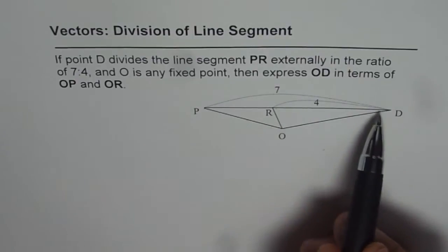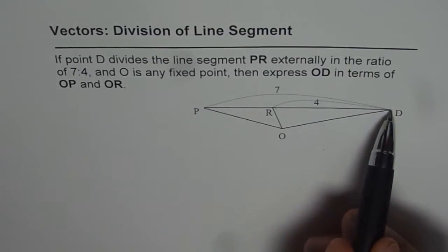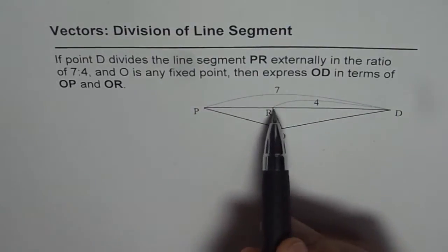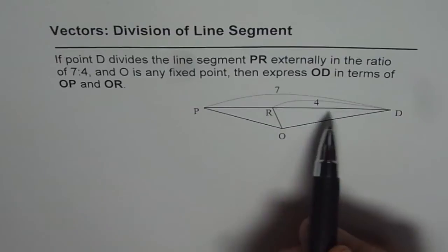which is external, as you can see, in the ratio of 7 - this is PD is 7 - is to 4. RD is 4, so 7 is to 4.